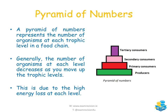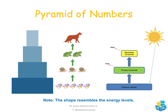In a standard pyramid of numbers, the producers (plants) have the largest bar, followed by primary consumers (snails), then secondary consumers (frogs), and then tertiary consumers (fox) with the smallest bar. The width of each bar represents the number of organisms at that level, decreasing from bottom to top. However, a pyramid of numbers does not always have a regular pyramid shape because it does not take into account the biomass of the organisms.